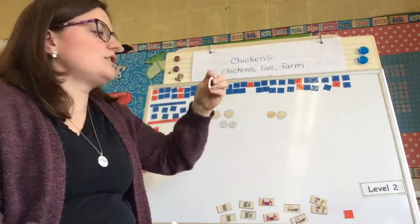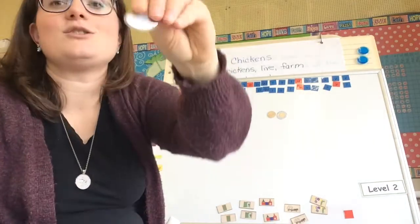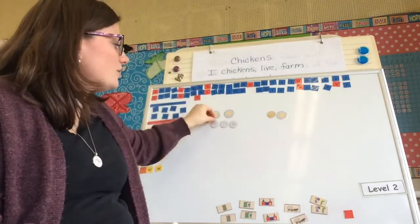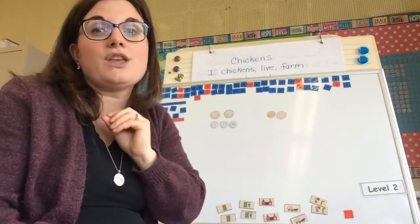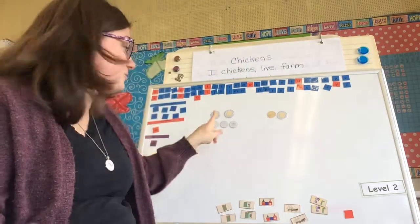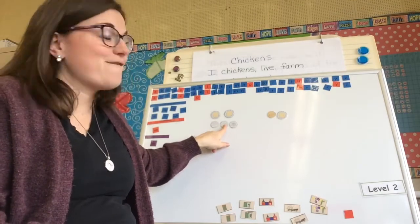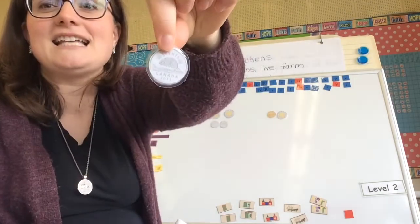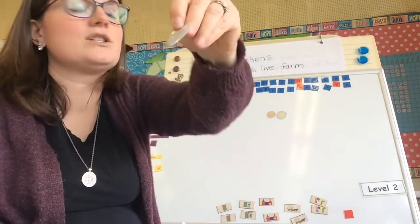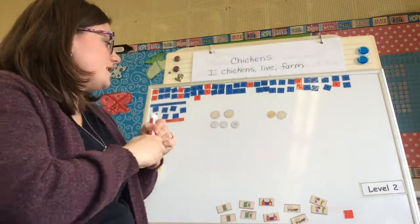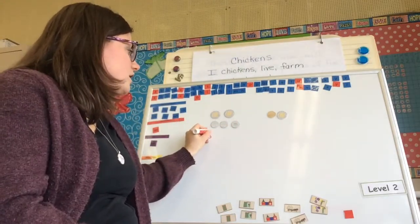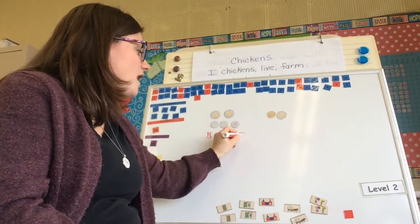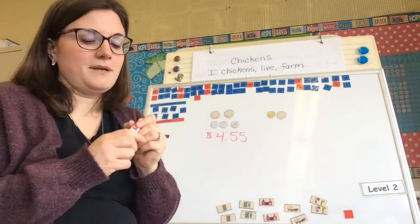Then I have two of these. Do you remember what these are called? Quarters. So I have two quarters, and they're worth $0.25. So 25 and 25 make 50. And then I have a nickel, which is worth $0.05. So I have $4.55 in my first group.